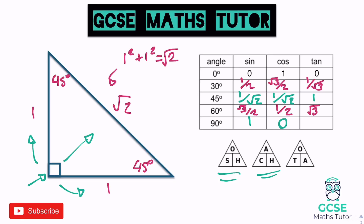For tan 90, it's opposite over adjacent. The opposite is root 2, but again we can't determine the adjacent, so we put 0 in. Now we have a maths problem: you can't actually divide by 0 — it's impossible. So the value of tan 90 is said to be undefined. You might have seen a math error on your calculator when you try to divide by 0, because it's impossible to do, so tan 90 is undefined.